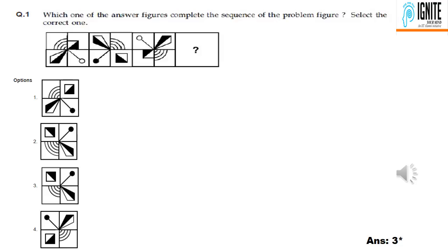If you look at the first and second figures, we will find the question figure. In that case, it will be blank and it will be dotted. So the pattern between figures guides the answer choice.